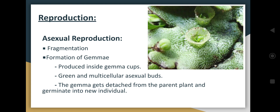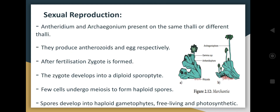The mode of reproduction can be both asexual and sexual. In asexual reproduction, they reproduce by fragmentation or formation of gemma. Gemma are cup-like structures — green, multicellular, asexual buds. The gemma detach from the parent plant and germinate into a new individual.